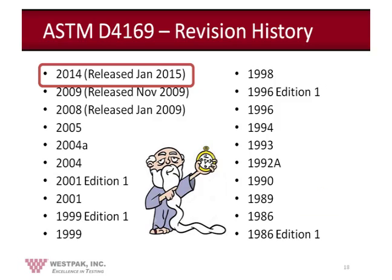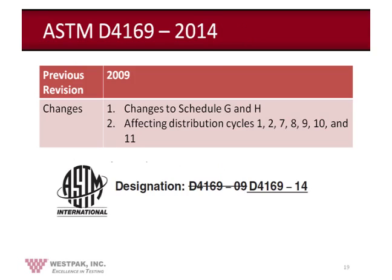ASTM D4169 is a very old timer with multiple revisions since 1986. The latest revision was released in January 2014. The previous revision was 2009. There are two key changes to the standard: the first change affects Schedule G and H, which in turn affect several distribution cycles. For those unfamiliar, ASTM D4169 has 18 distribution cycles you can choose to test your package system, with schedules such as manual handling, vehicle stacking, and so on.